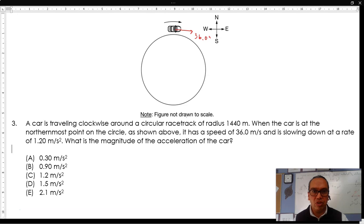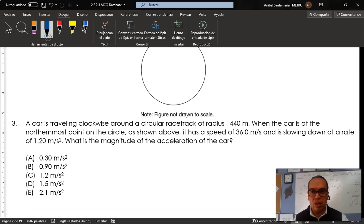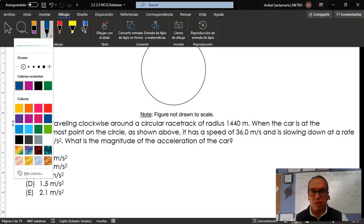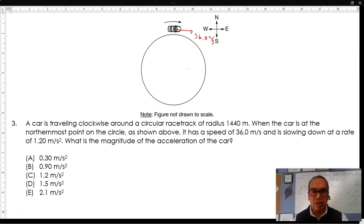Given that you have a speed in this direction of 36.0 meters per second and a radius of 1,440 meters, then the radial acceleration is going to be given by the square of the speed divided by the radius. And in this case, that's equal to 0.90 meters per second squared.